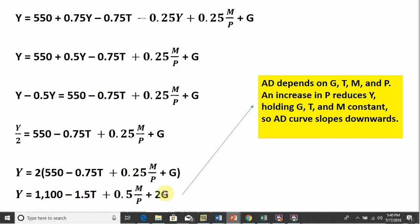And as I've written up here, our aggregate demand depends on G, which is government purchases. It depends on taxes. It depends on the money supply. And it depends on the price level. We can also see the downward-sloping nature of aggregate demand. An increase in P holding T, G, and M constant will mean we'll have a decrease in the quantity of aggregate demand. So the aggregate demand curve does slope downwards. Another thing we can see here is that if M or G increases, that'll lead to an increase in aggregate demand. And an increase in T would lead to a decrease in aggregate demand.